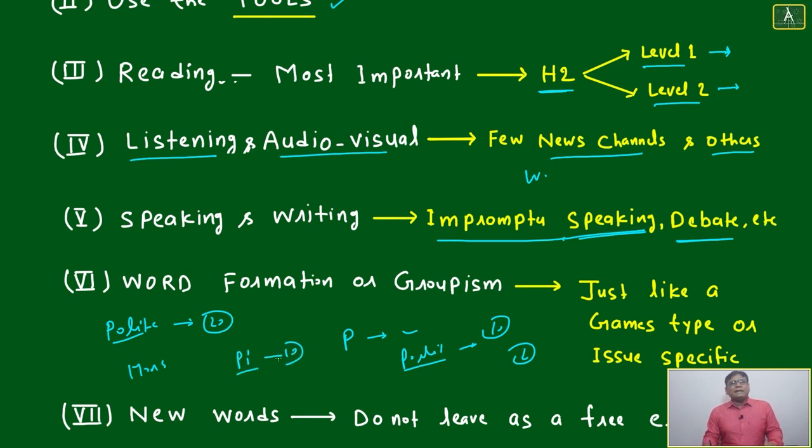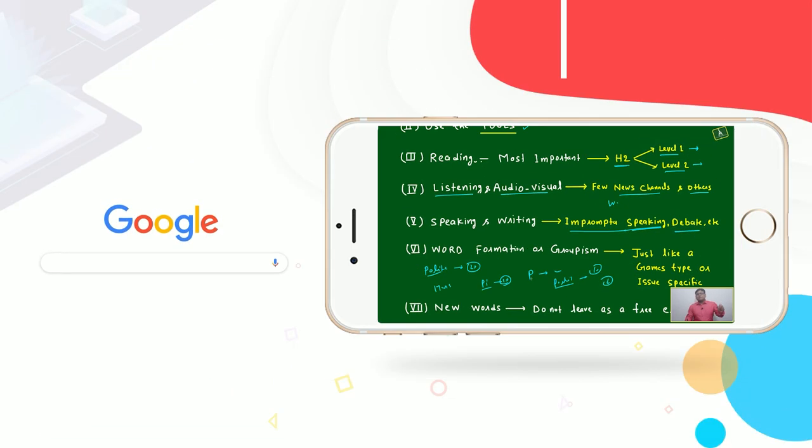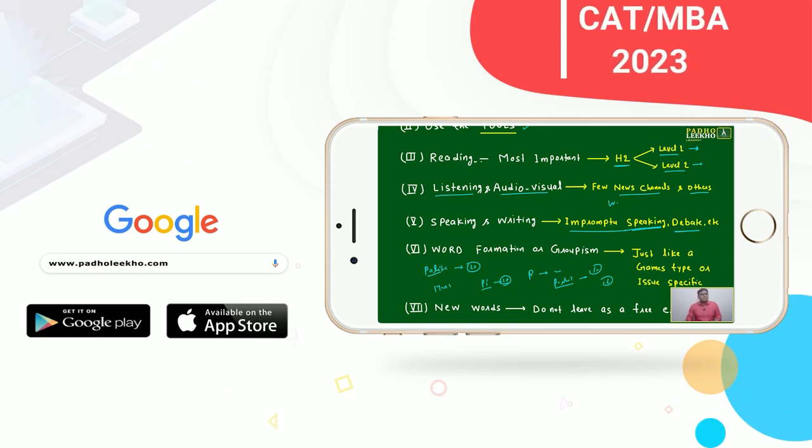Similar way you can take words starting with P, or words starting with PI. Write 10 words starting with PI - pick, piece, pixel - immediately it will come to mind. Just put a little stress. After 10 or 15 days, within one minute you will be able to write.